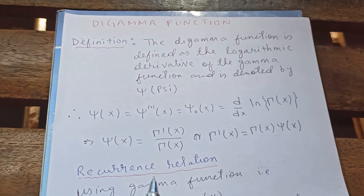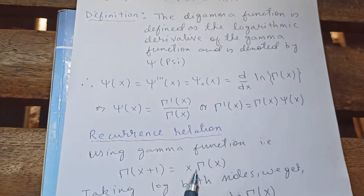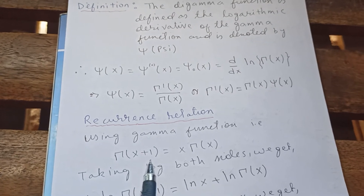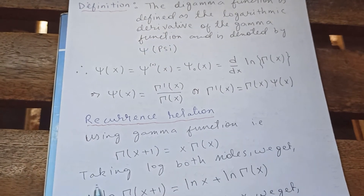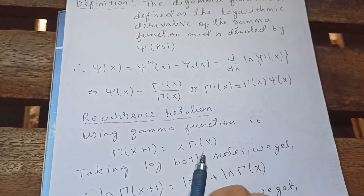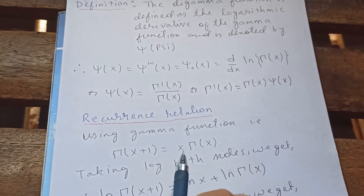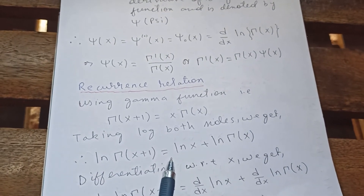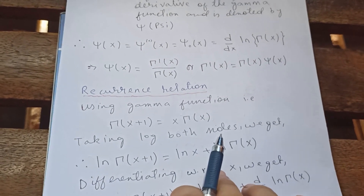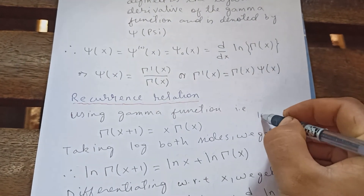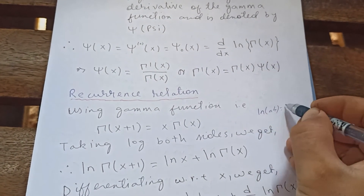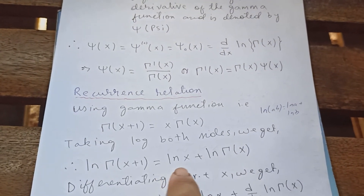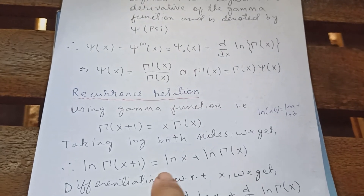Now we are going to see a recurrence relation. Using the gamma function property Γ(x+1) = x·Γ(x), we take the log of both sides: ln Γ(x+1) = ln x + ln Γ(x), since ln(ab) = ln a + ln b.